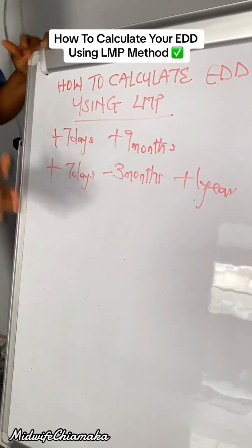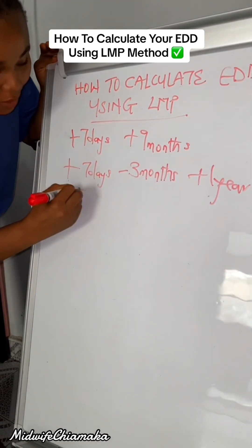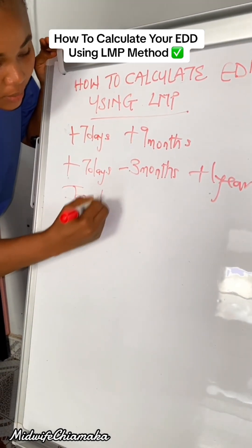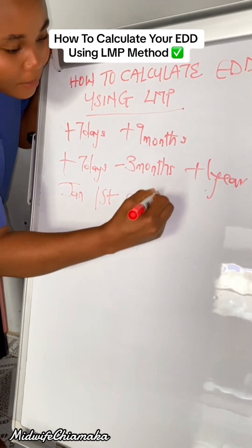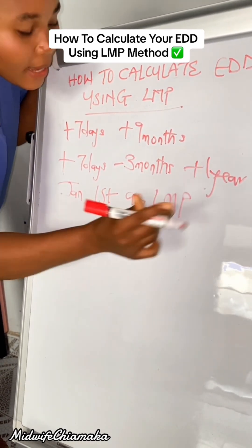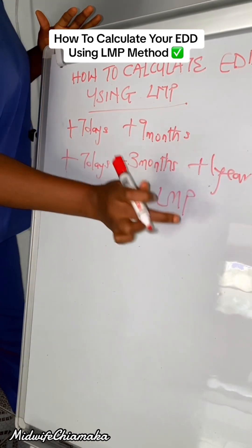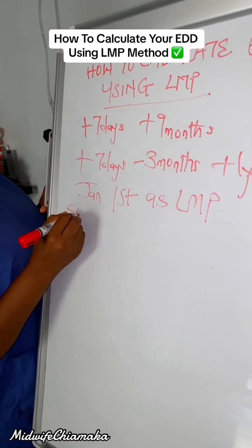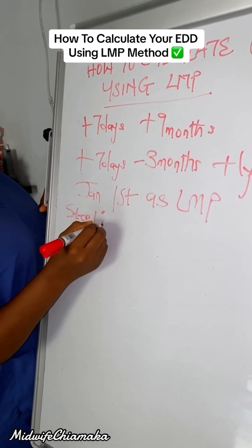For today's study, we'll be taking January 1st as your LMP. LMP stands for last menstrual period. Step one, you have to add it.